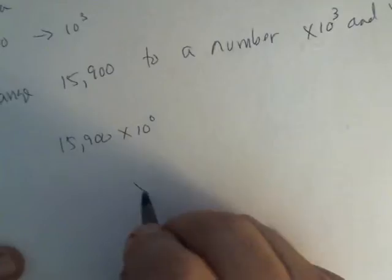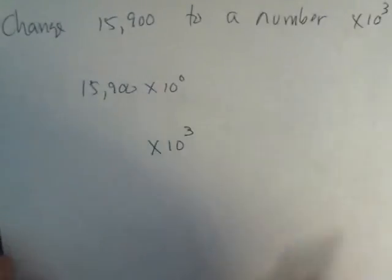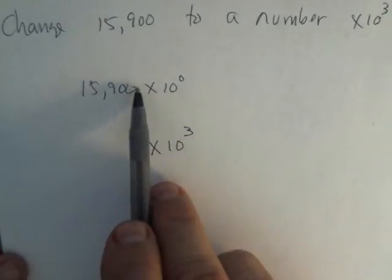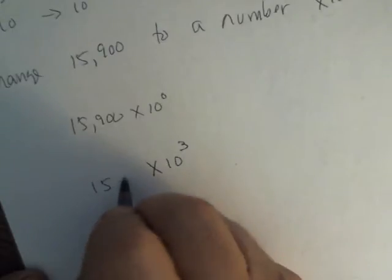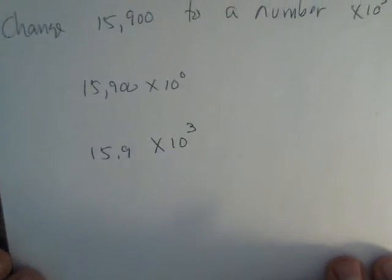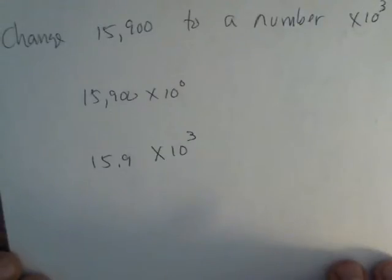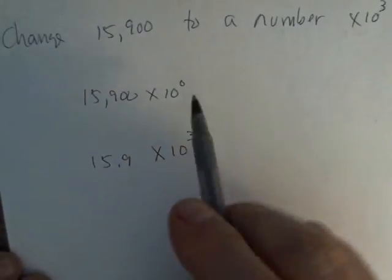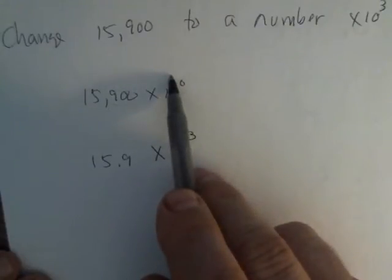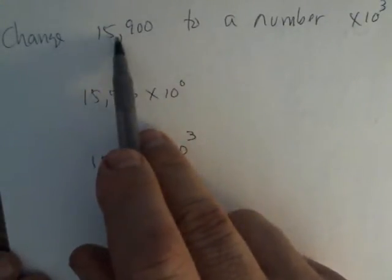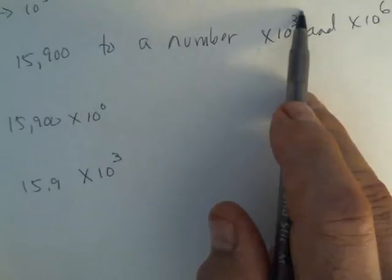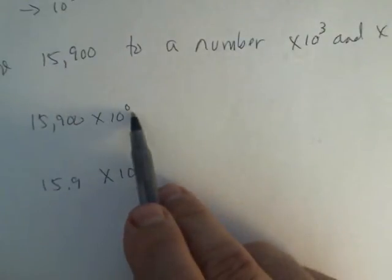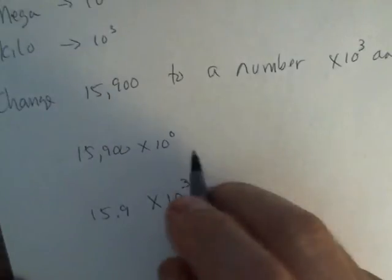So in other words, if I'm going to times 10 to the 3rd, then I have to move the decimal point in this number 1, 2, 3 places to the left. So this would be 15.9 times 10 to the 3rd. Again, you take whatever power of 10 you start with. If it's a whole number, then we assume the power of 10 is 0. Since I am going to a number times 10 to the 3rd, I am adding 3 to the exponent. So I move the decimal left 3 in this number.